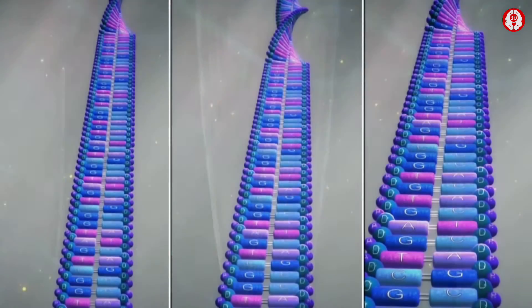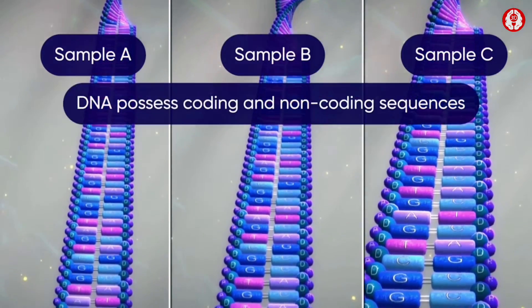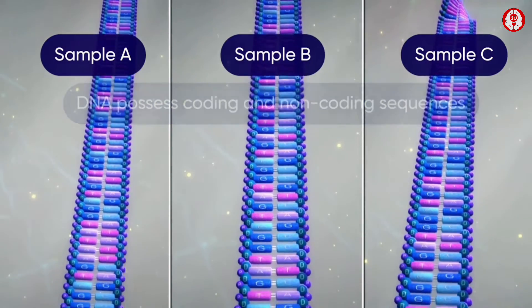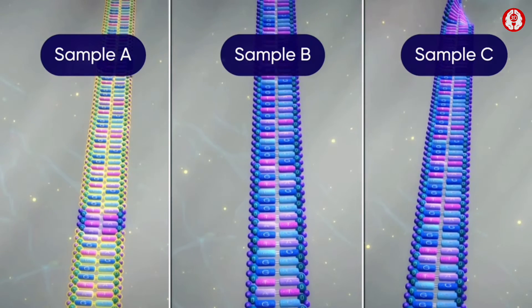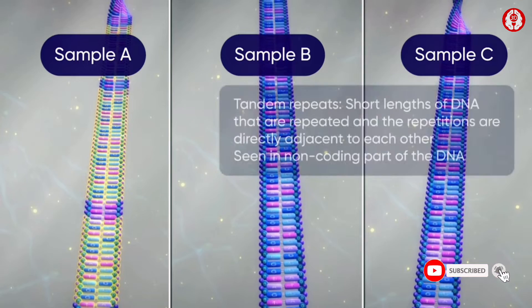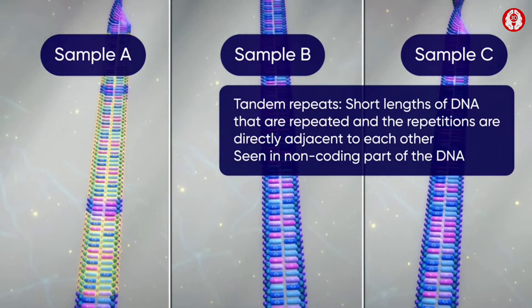A closer look at the DNA of each sample shows that it possesses coding and non-coding sequences. Here, the non-coding DNA has short nucleotide sequences which are organized as tandem repeats. For example,